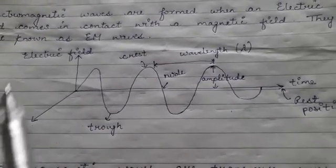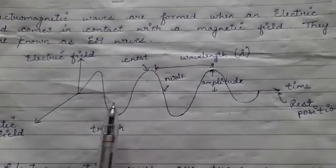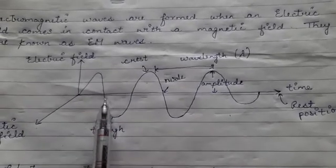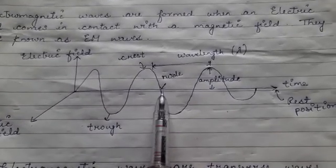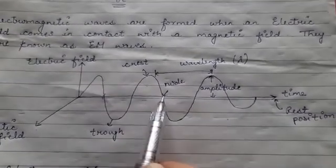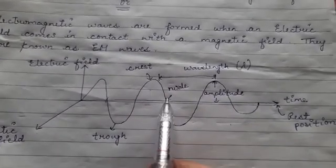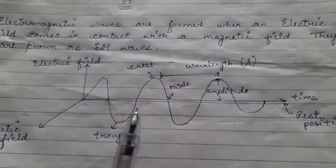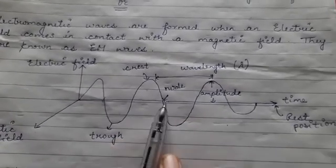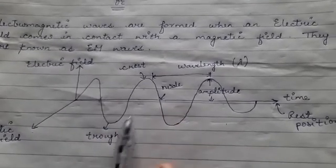One trough and one crest together generate one complete wave. This means if we take this part — from the trough to the crest — that is one cycle, and one wave will be complete. The trough goes up to the crest, completing one cycle, one wave.